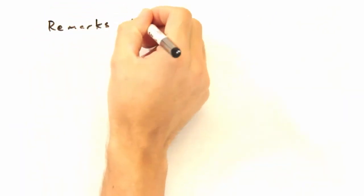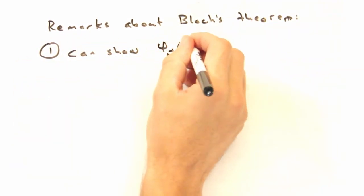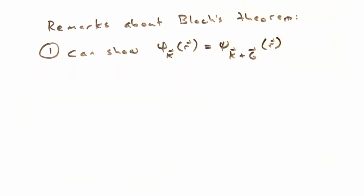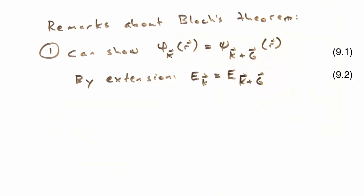Before we end today though, I want to bring up a couple remarks about Bloch's theorem. The first is that we can prove our wave function at k equals our wave function at k plus g. And by extension, e sub k is equal to e sub k plus g.